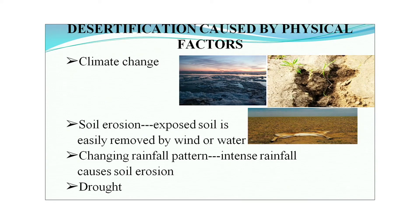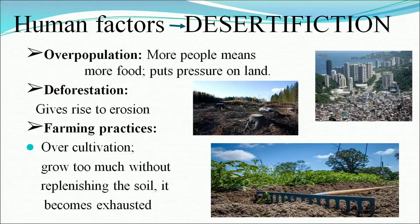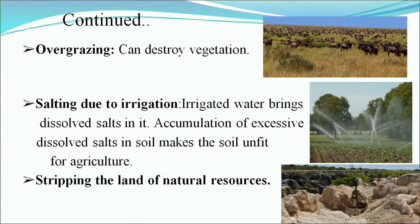Desertification caused by physical factors: due to change in climate, soil erosion takes place. The exposed soil is easily removed by wind or water. Changing rainfall patterns — whether intense rain or lack of rain — damage the soil, along with drought. Human factors: overpopulation means more food demand, more pressure on land, leading to deforestation and erosion. Over-cultivation — growing too much without replenishing the soil — exhausts it. Over-grazing can destroy vegetation.